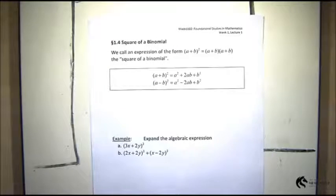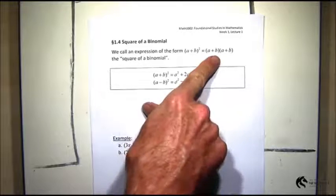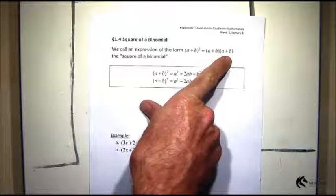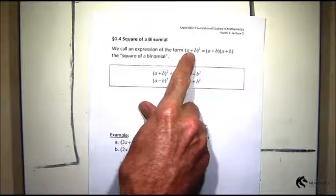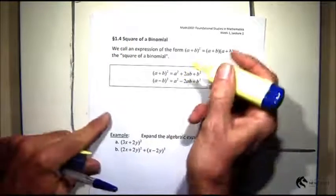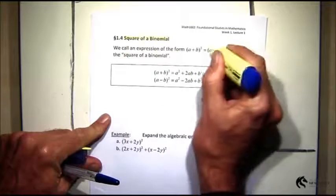A special case of binomial products is when it's the same term twice. So (a + b) times (a + b), that's a number times itself, so that's (a + b) all squared. That's called the square of a binomial.